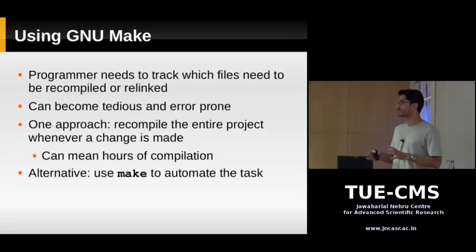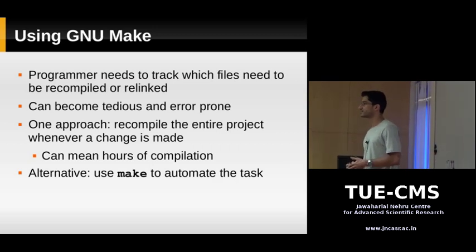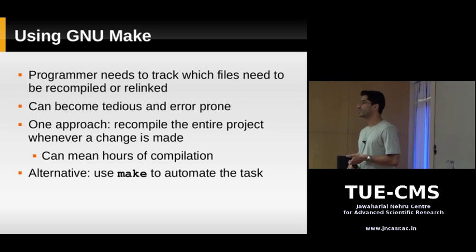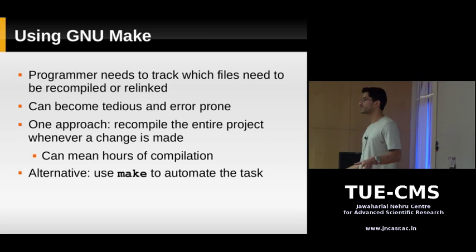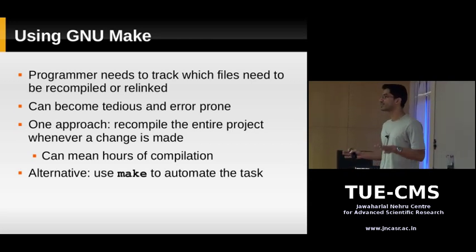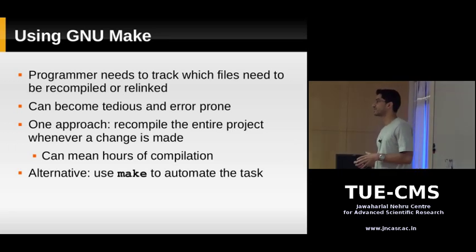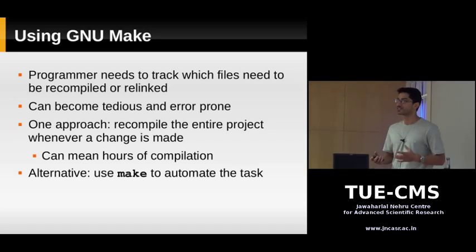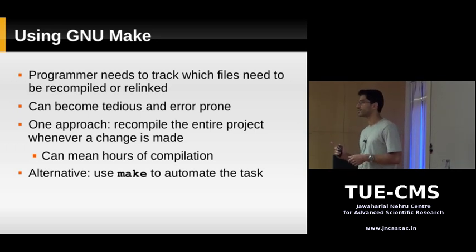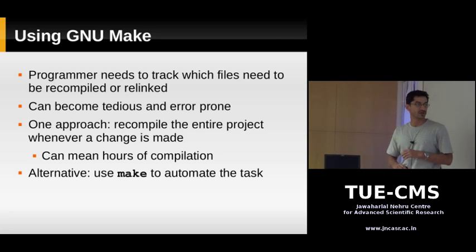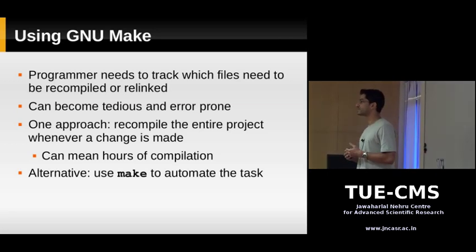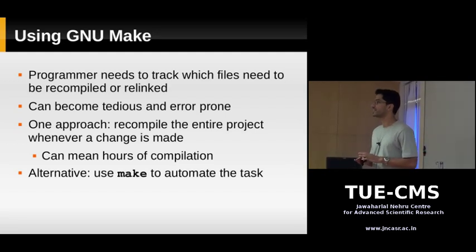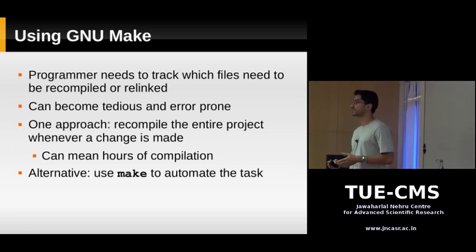This process of keeping track of what has changed, what needs to be rebuilt, and when the executable needs to be relinked becomes complicated and error-prone. One solution is to just recompile everything whenever you make a change. But for a really large program, that could mean an hour of compilation time when you actually only need to spend a minute recompiling one object file. The solution is the make utility, which automates tracking changes and rebuilding executables and object files.